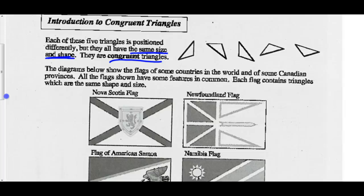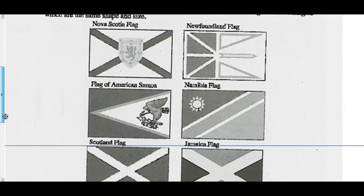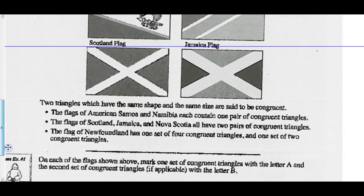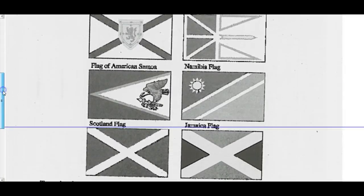The diagrams below show the flags of some countries in the world and of some Canadian provinces. All the flags shown have some features in common — each flag contains triangles which have the same shape and size, meaning congruent triangles. Two triangles which have the same shape and same size are said to be congruent. The flags of American Samoa and Namibia each contain one pair of congruent triangles. In American Samoa, this triangle is congruent to this triangle. Over in Namibia, this triangle is congruent to this triangle — so those are two sets of congruent triangles.